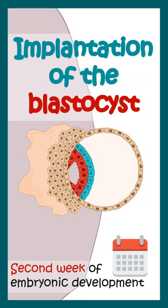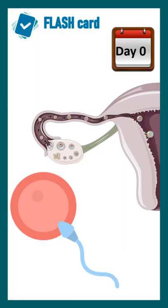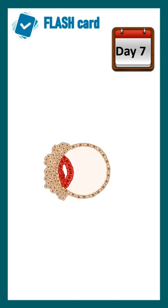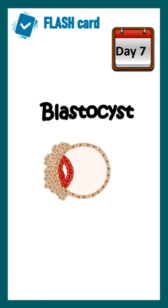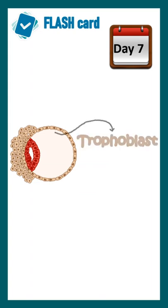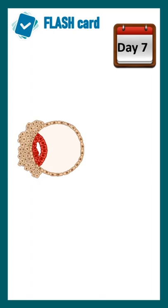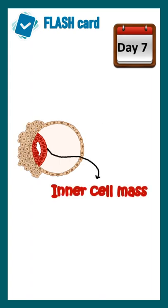Let's look at the events of the second week of embryonic development. After a successful fertilization, at day 7 the embryo is known as a blastocyst, which has two layers: the outer trophoblast and the inner cell mass, which contains the stem cells.